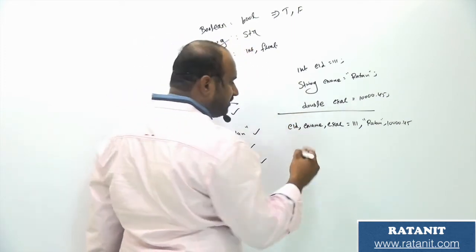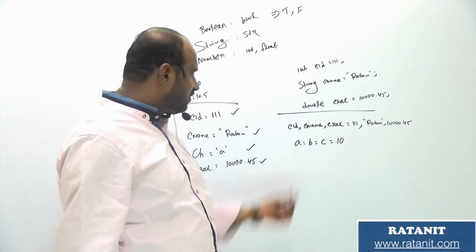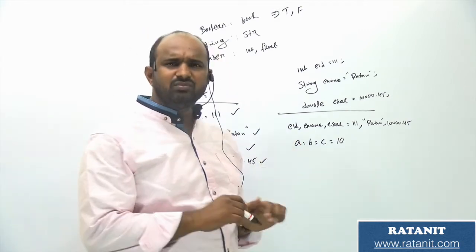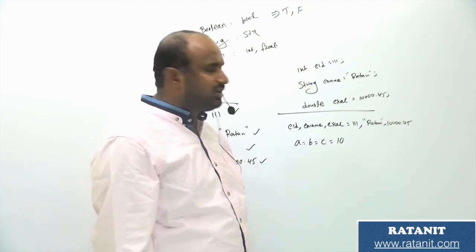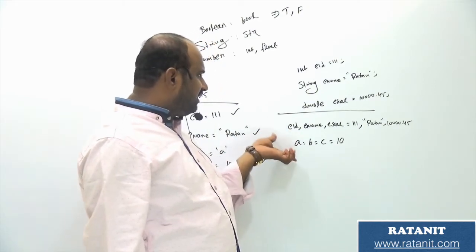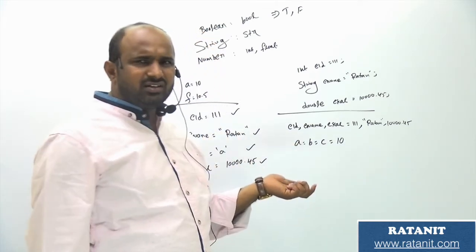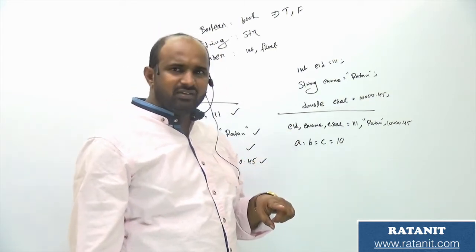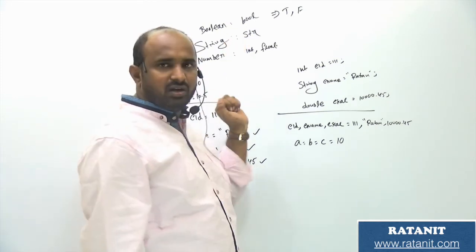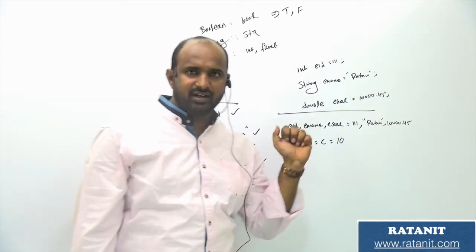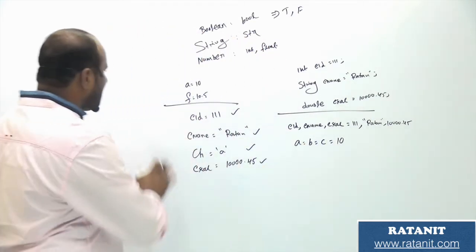If you want to assign a single value to multiple variables, you can write: a = b = c = 10. Then a, b, and c all have the value 10. These are the two main ways to initialize variables in Python.